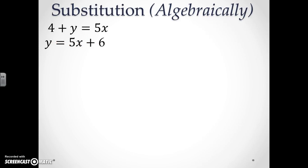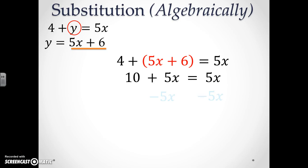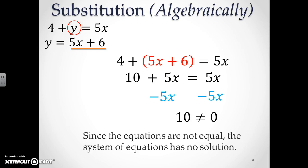Now let's solve a system by substitution. In this case, you already have an equation that is equal to one variable. So we are going to substitute 5x plus 6 into the first equation where we see y. This becomes 4 plus the quantity of 5x plus 6 is equal to 5x. Here you can get rid of the parentheses and combine like terms to get 10 plus 5x equals 5x. Therefore you are going to subtract 5x from both sides to get 10 does not equal 0. Since the equations are not equal to each other, this system of equations does not have a solution.